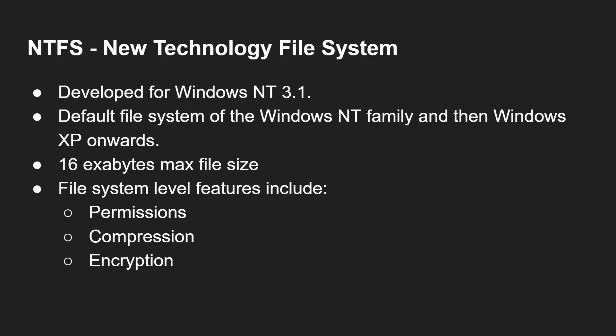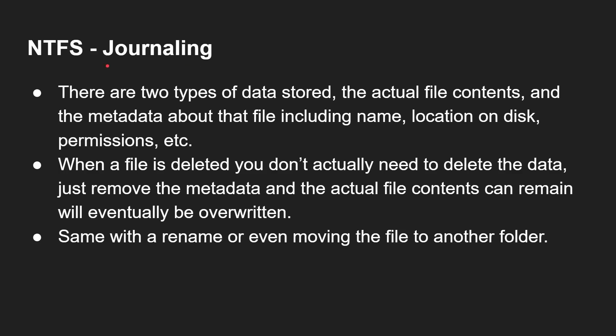There are some differences with NTFS that you don't get in FAT32 or exFAT: you get file permissions, compression, and encryption — all built in at the file system level. But the biggest difference is that NTFS is a journaling file system. There are two types of data stored when you write data to a disk: the actual file content — such as the pixel data of a photograph you're storing — and metadata about the file.